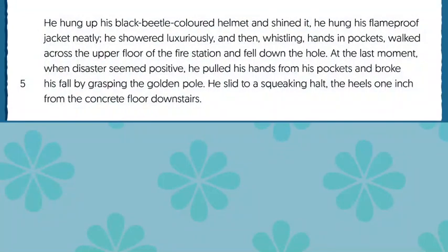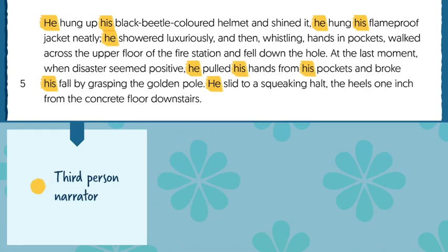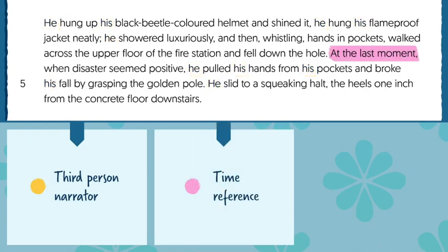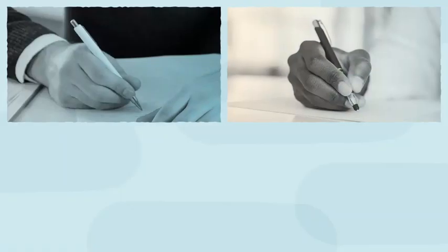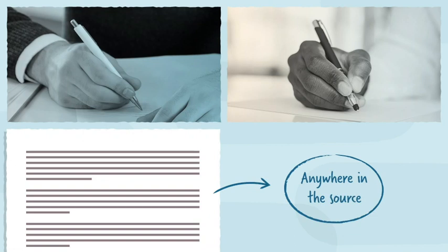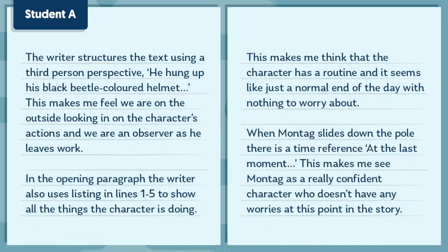For example, in the first part of our sample text, you might pick the use of a third person narrator, the reference to time, or the way the writer uses listing to describe the character's actions. Now let's take a look at how two students have written up their three ideas. Remember, your answer can come from anywhere in the source. We'll start with an extract from Student A's response. Press pause on the video now to give yourself time to read it through carefully and press play again when you're ready.